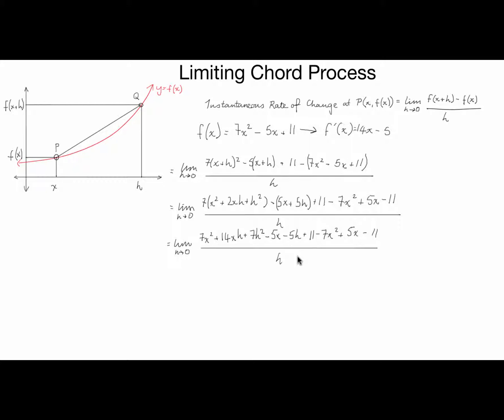Now, that's all looking a little bit crazy at the moment, so what we do now is we're going to collect our like terms. So as you can see, we have 7x² - 7x², they'll have +11 - 11, so they basically cancel each other out.